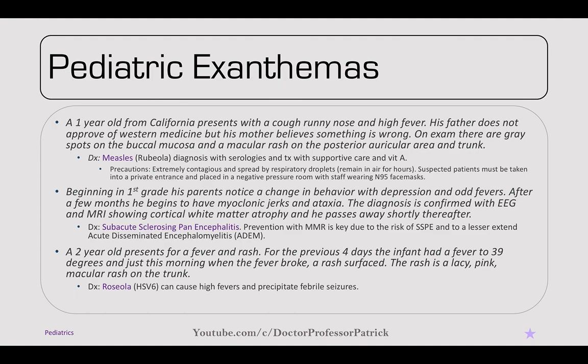For common pediatric exanthemas, a one-year-old presents with cough, runny nose, and high fever. His father does not approve of Western medicine. On exam, there are gray spots on the buccal mucosa — Koplik spots — and a macular rash on the posterior auricular area and trunk. These are classic signs of measles, or rubeola. It's diagnosed with serologies and treatment is supportive care and a trial of vitamin A. It's extremely contagious, spreading by respiratory droplets that remain in the air for hours. Suspected patients must be placed in a negative pressure room with N95 masks.